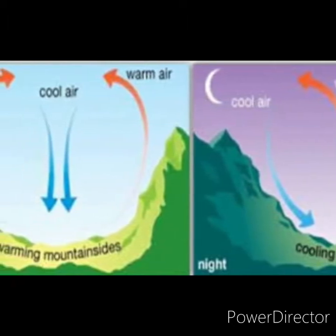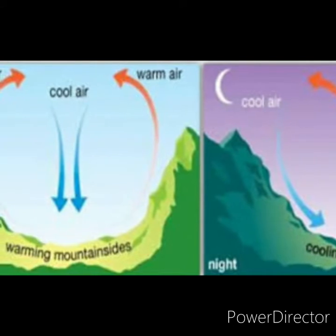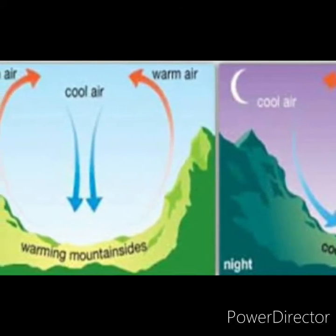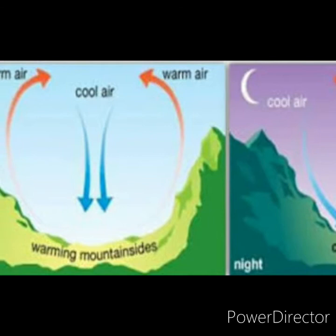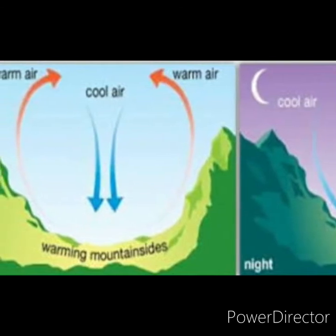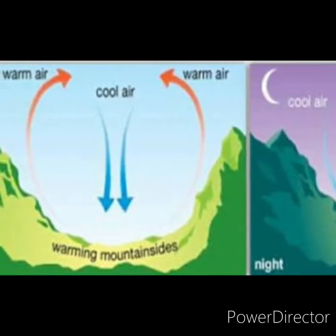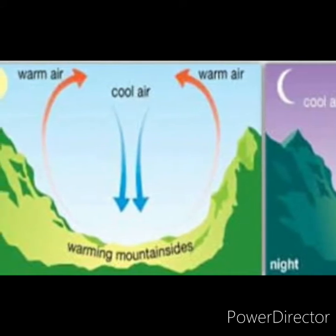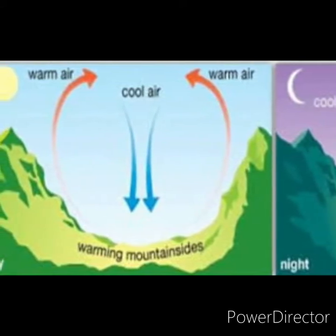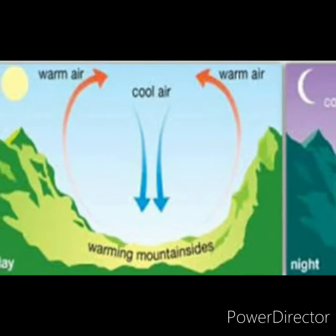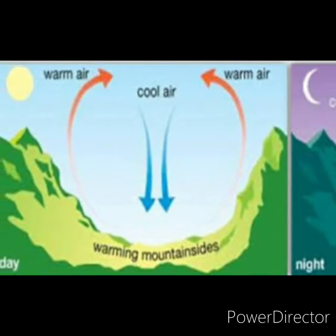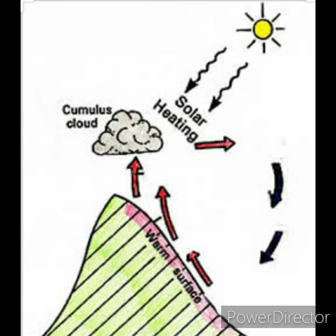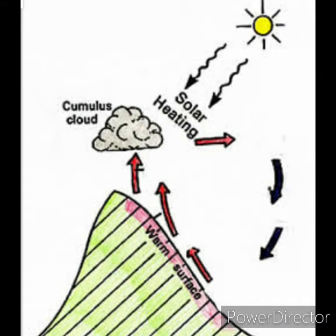Seasonal winds blow from sea to land during summer and from land to sea during winter. During the summer season, winds blow from sea to land, and during the winter season, they blow from land to sea.